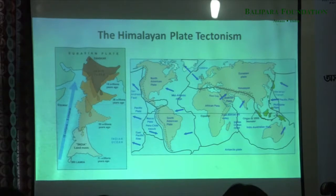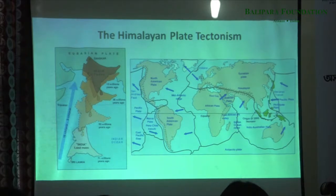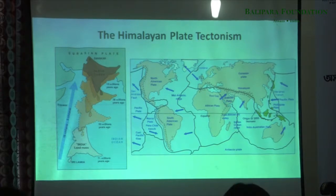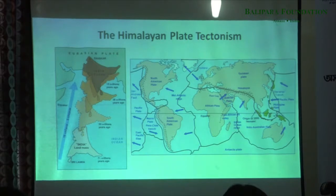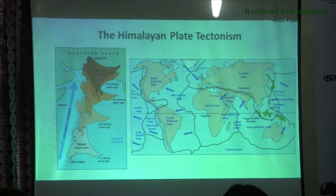Going into how the Himalayas were formed - around 180 million years ago, the Indian subcontinent broke free from Africa, moved northeastwards, came and hit against the Asian landmass, and what was formed in between is the Himalayas. There must have been a sea between the two, known as the Tethys, and it is actually the sediments of the bed of the Tethys which are standing up as the Himalayas today - which is why you find only marine fossils up on the hills, even on the highest mountain in the world. That's why people started thinking about plate tectonic theory.